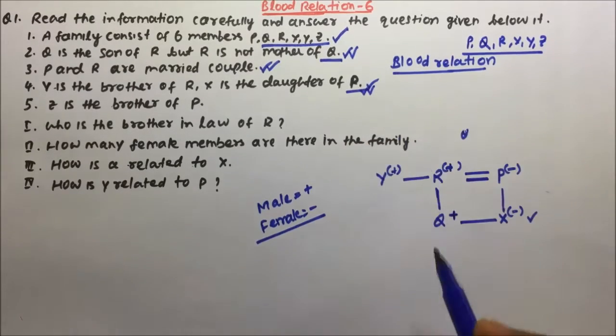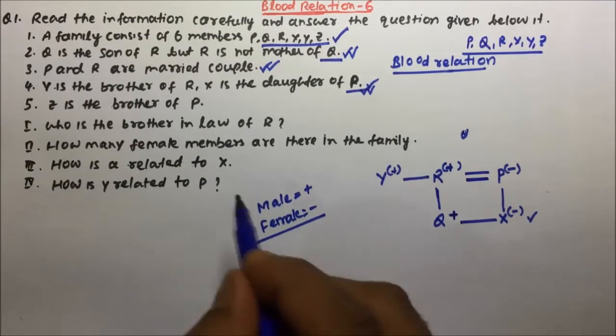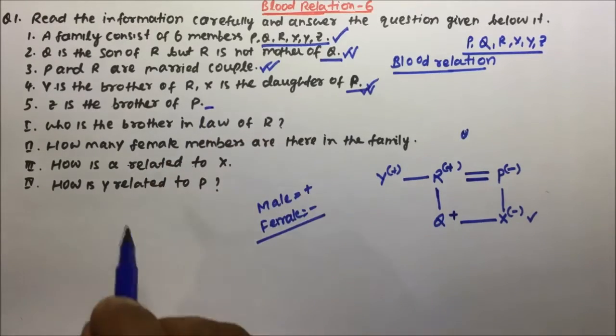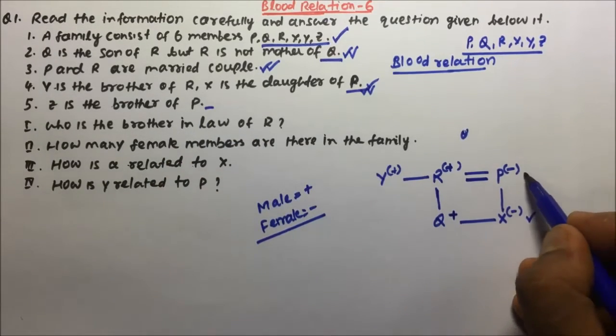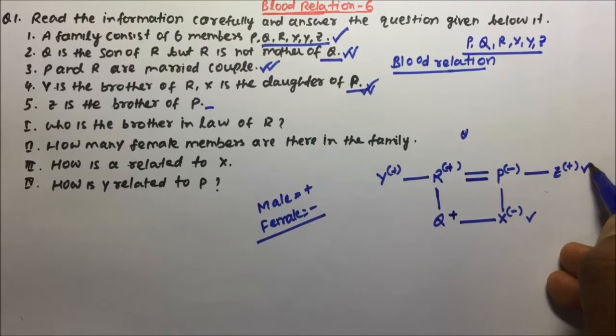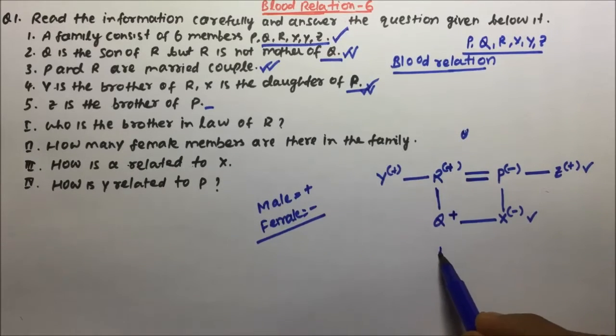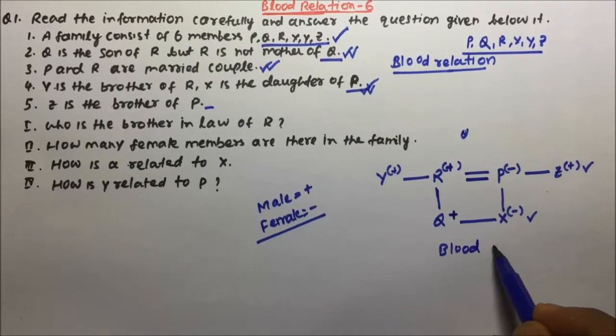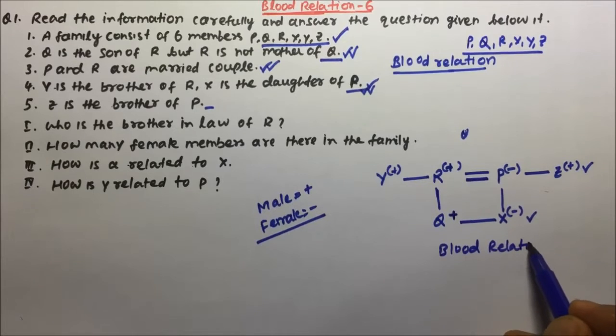So statement four that also we have drawn using the blood relation tree. Now Z is the brother of P. That means Z will be male because Z is a brother, and for male we use plus sign. So Z is a brother of P. Now this is our blood relation tree and using this we have to answer four questions below.